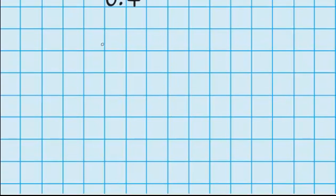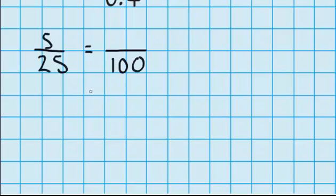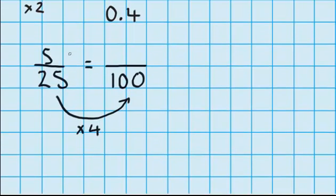Now let's try another question, but this time without the picture. I've got five twenty-fifths and I want to show that as a decimal. Just like before, I want to change it into an equivalent fraction which is easier to change into a decimal. I know that I can change twenty-five into hundredths — all I have to do is multiply twenty-five by four. Since I've multiplied the denominator by four, to make it an equivalent fraction I also need to multiply the numerator by four. Four times five is twenty, so five twenty-fifths is the same as twenty hundredths.